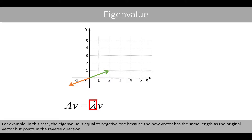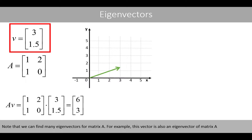For example, in this case the eigenvalue is equal to negative 1 because the new vector has the same length as the original vector, but points in the reverse direction. Note that we can find many eigenvectors for matrix A. For example, this vector is also an eigenvector of matrix A.